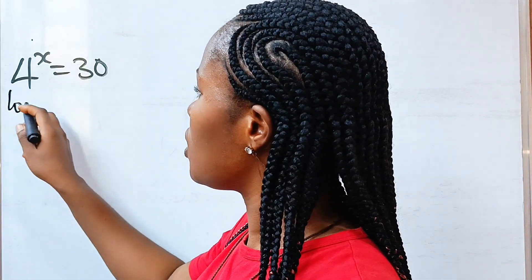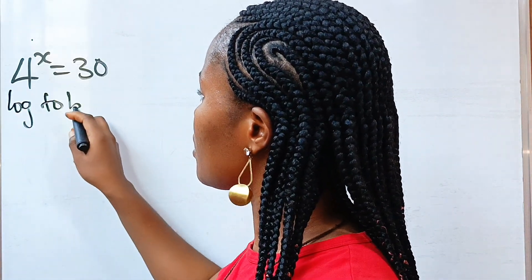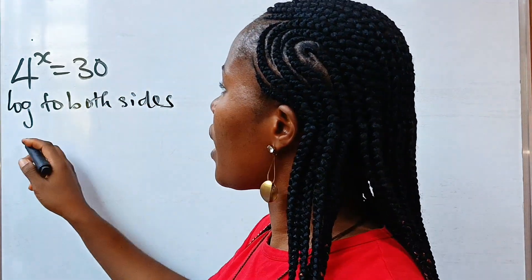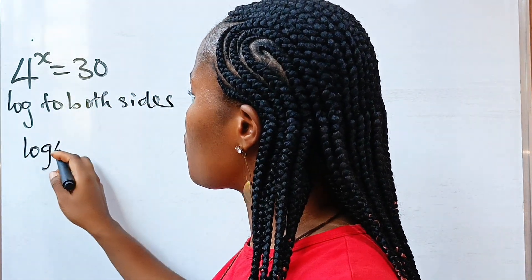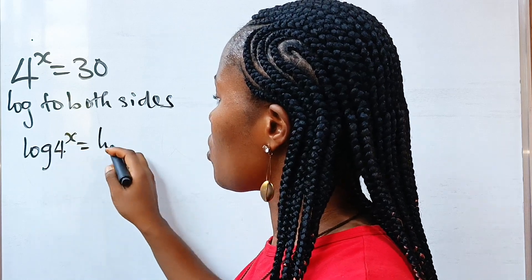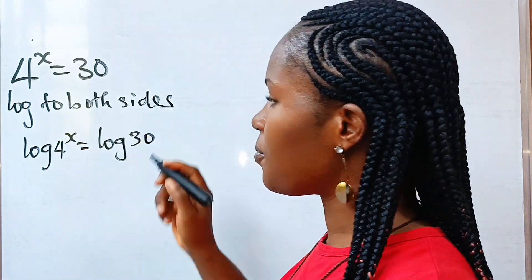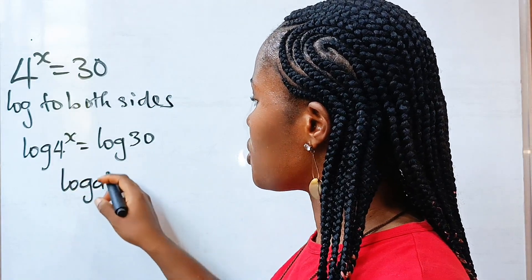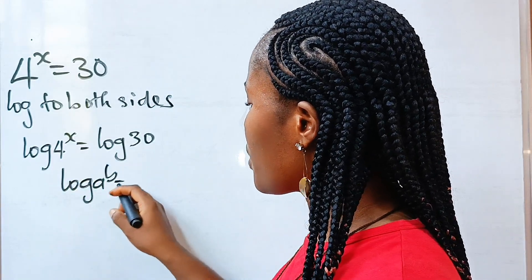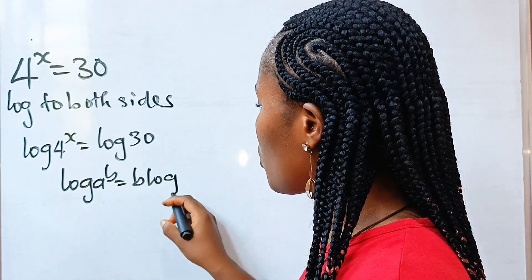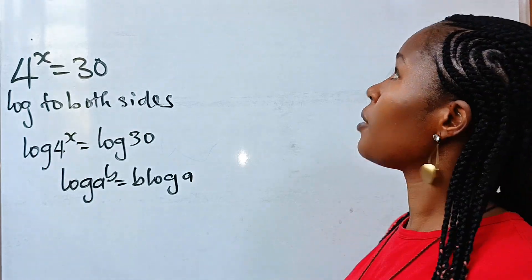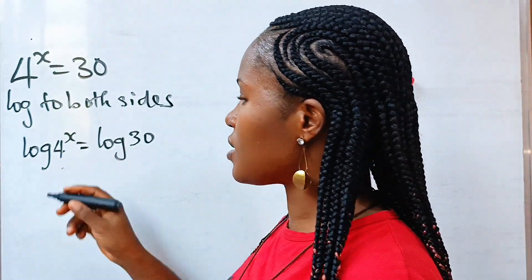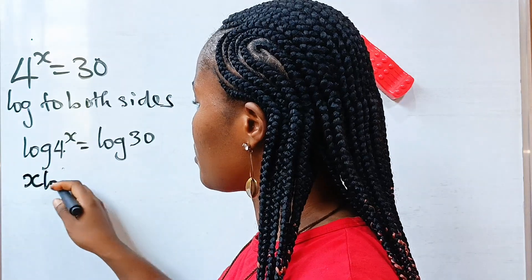Let's introduce log to both sides. So we have log of 4 to the power of x is equal to log 30. When you have log of a raised to the power of b, this is equal to b multiplied by log a.